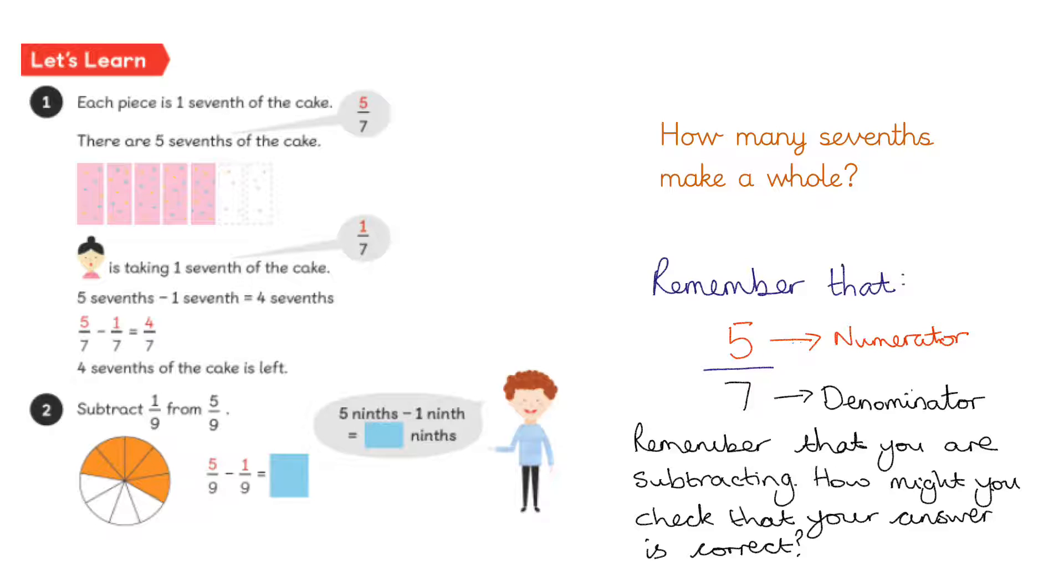Let's learn. Each piece is one seventh of the cake. If we look, the number seven is the denominator because that's how many pieces there were all together. To begin with, there were five sevenths of the cake. The girl is taking one seventh of the cake more, so five sevenths take away one seventh is four sevenths. This means that four sevenths of the cake is left.